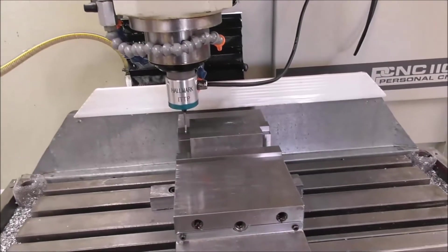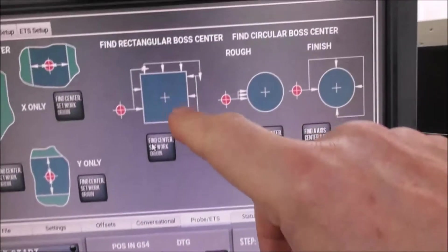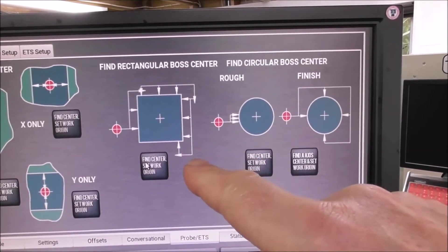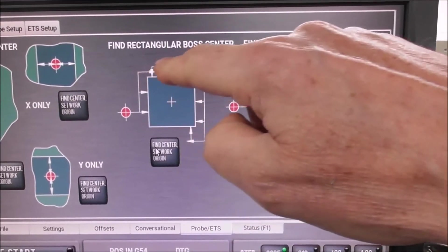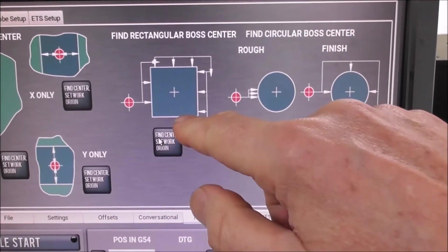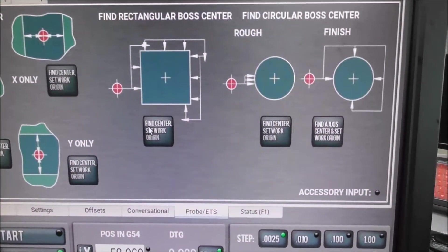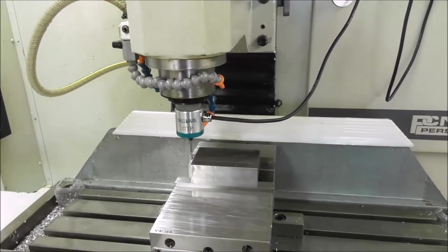So I'm going to set the work origin in the middle of this block. And so this particular probing routine, find rectangular boss center, find center set work origin, is really good. It just does a quick traverse around the block. The software works out the size of the block, and then it does the four critical probes to find the exact center.